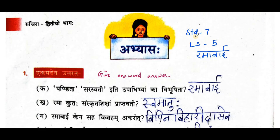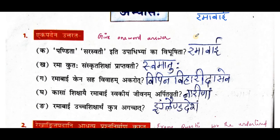Now let us go into the abhyasaha. First question: ekapadena uttaratha — give one word answer. The first question is: pandita saraswati iti upadibhyam ka vibhushita — who was conferred with the titles pandita and saraswati? It is Ramabhai, so Ramabhai is the answer. Second question: ramakutaha sanskrit sikshan praptavati — from where did Ramabhai learn Sanskrit? From her mother.